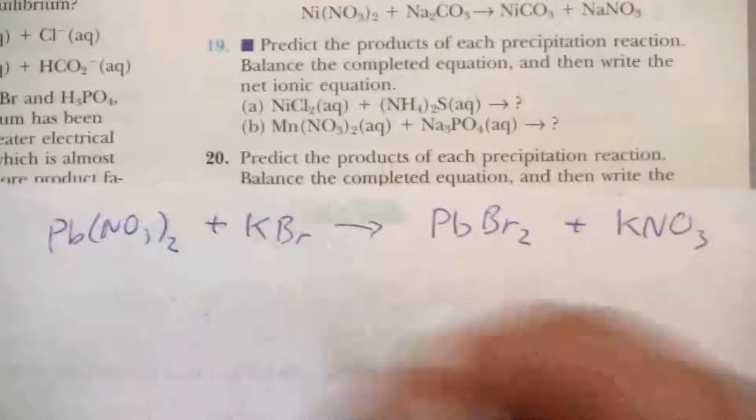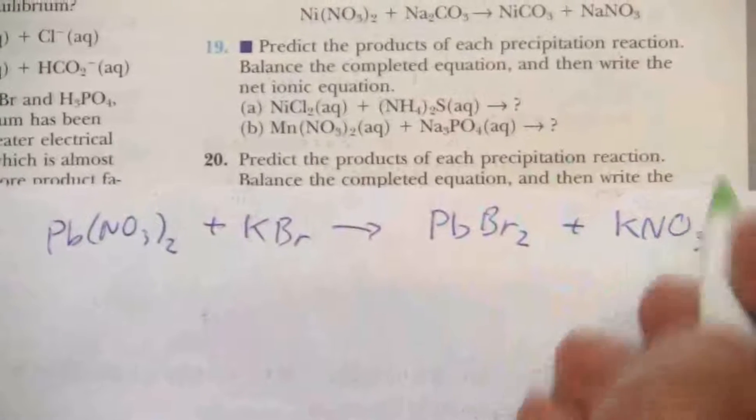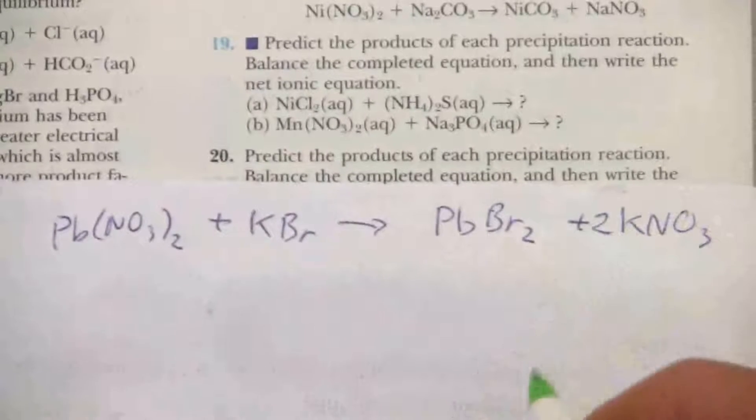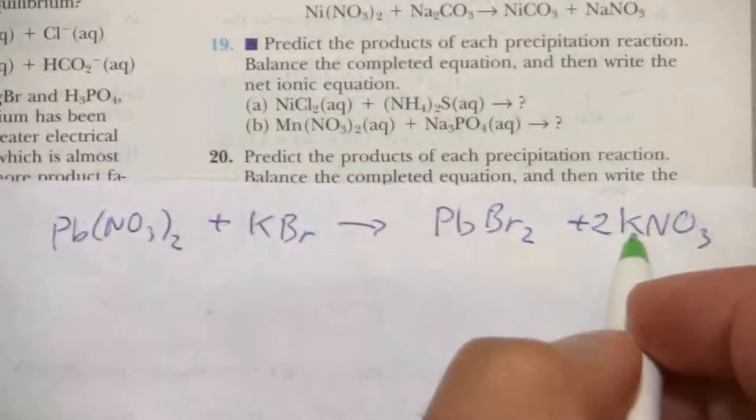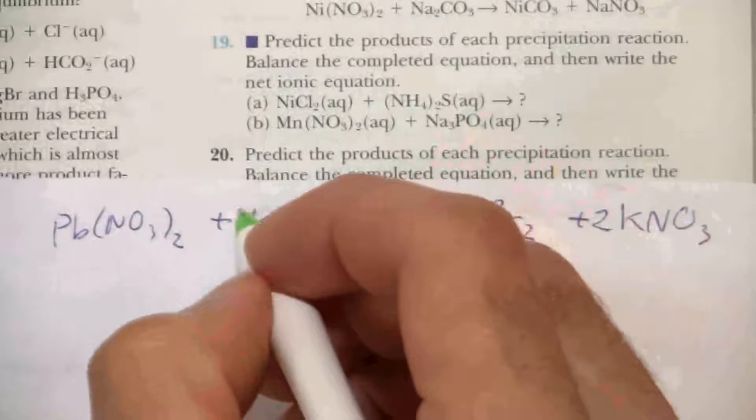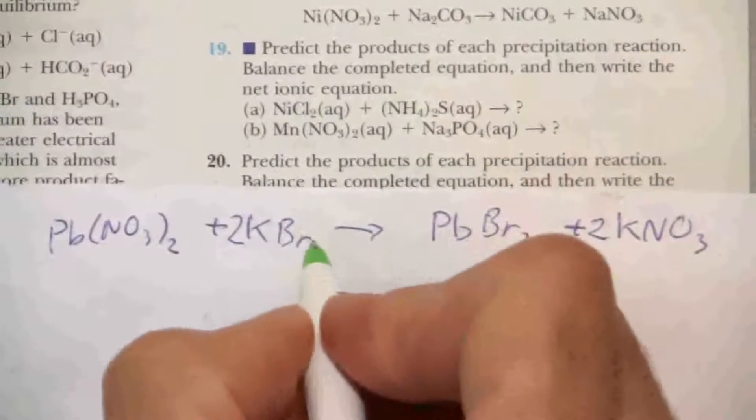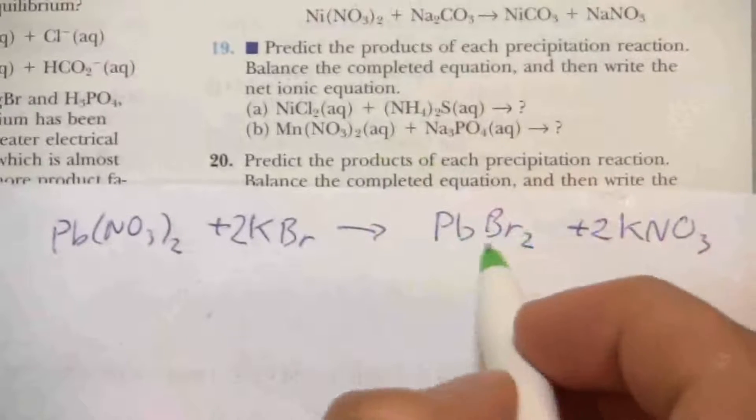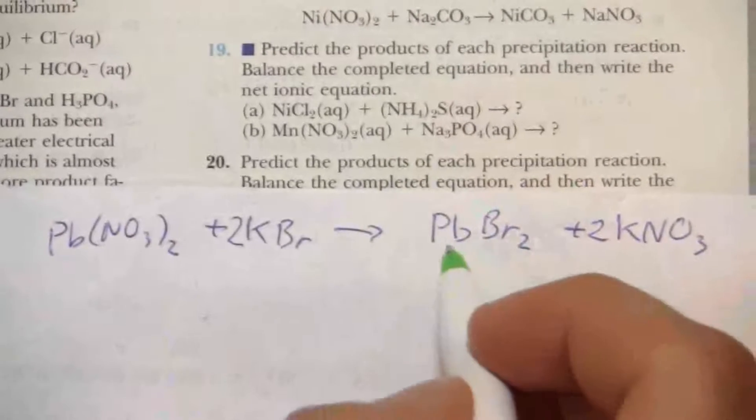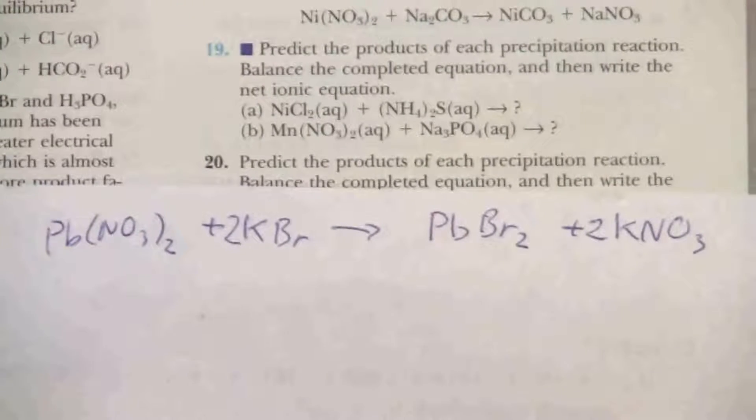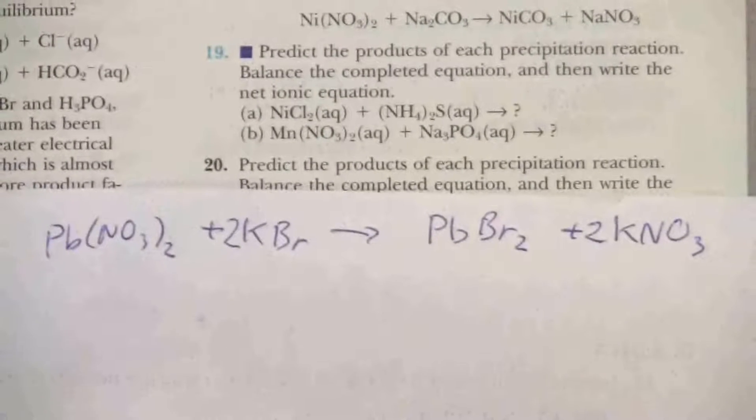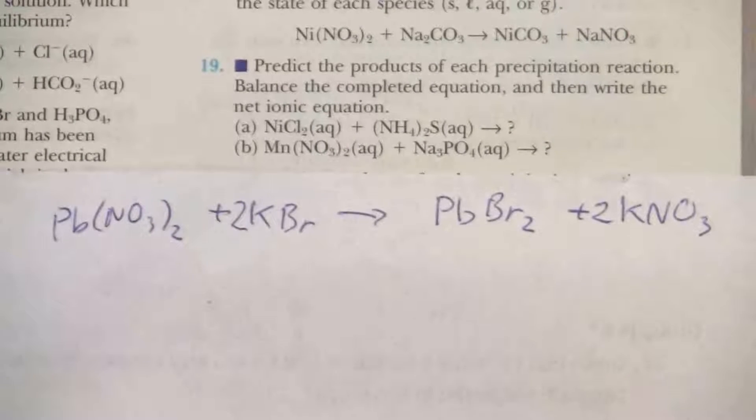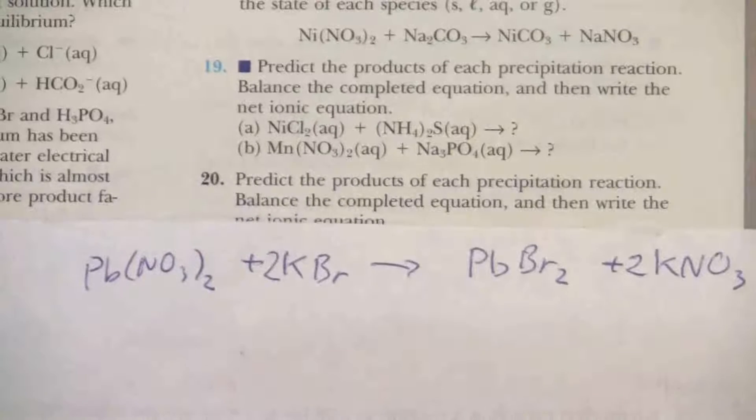And so we just have two nitrate ions, so we need two nitrate ions over here. So we put a two in front there, and that gives us two potassium ions. So we need a two in front of our KBr. That gives us two bromine atoms, which we have over there. Then we check the other one. It verifies that we have balanced that correctly. So now we've balanced the equation.